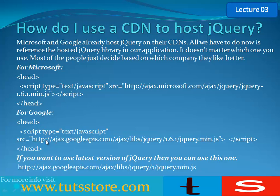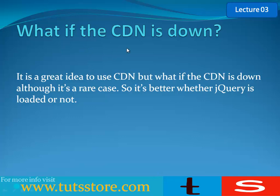If you want to use Google CDN, you have to use this line: ajax.googleapis.com/ajax/libs/jQuery/[your version]/jQuery file name. And if you want to use the latest version of jQuery, you can use: ajax.googleapis.com/ajax/libs/jQuery/1/jQuery minified version name. That's it.